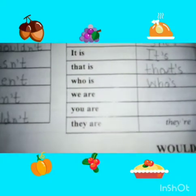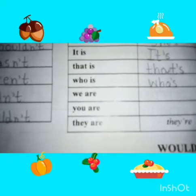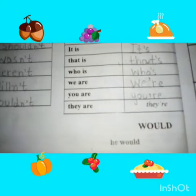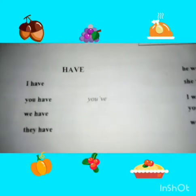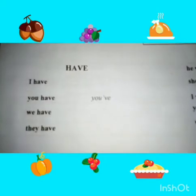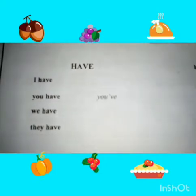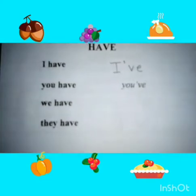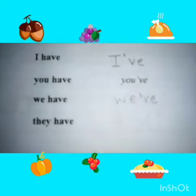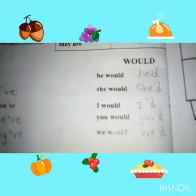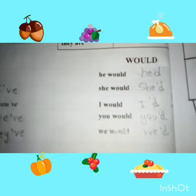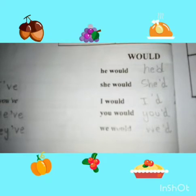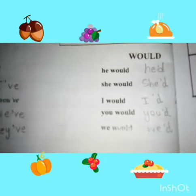We are → we're. You are → you're. They are → they're. Next: I have → I've. You have → you've. We have → we've. They have → they've. Would: he'd, she'd. Next: I'd, you'd, we'd.